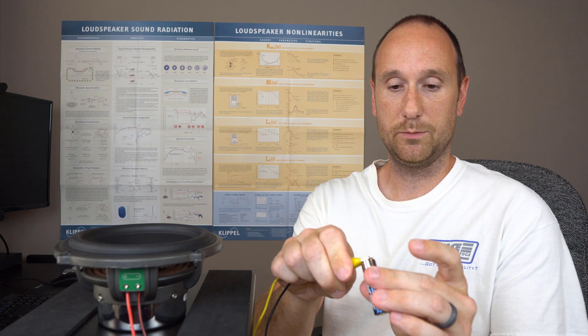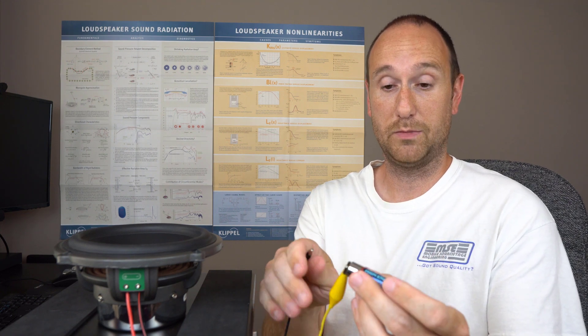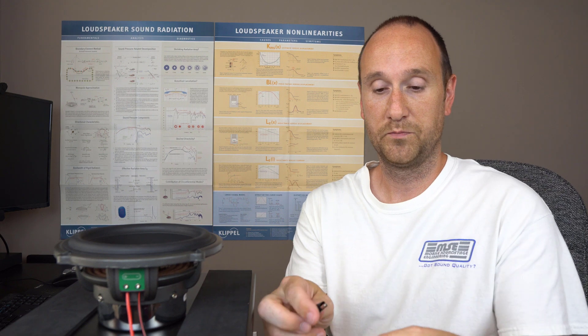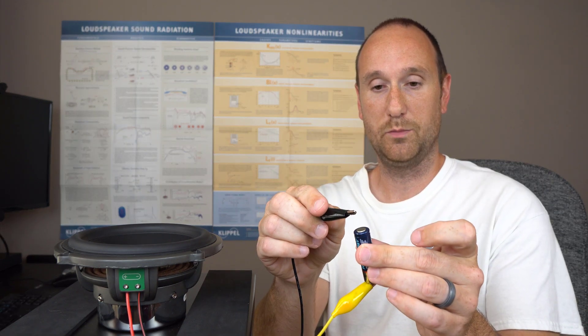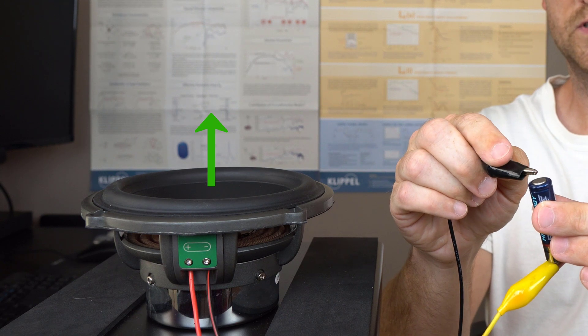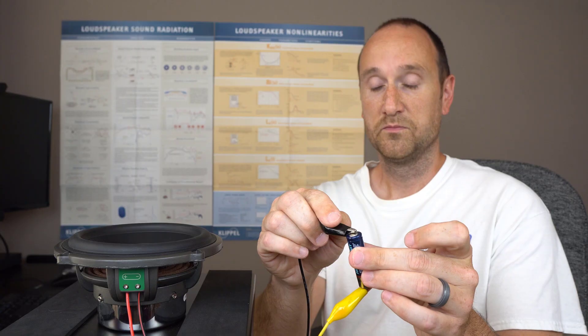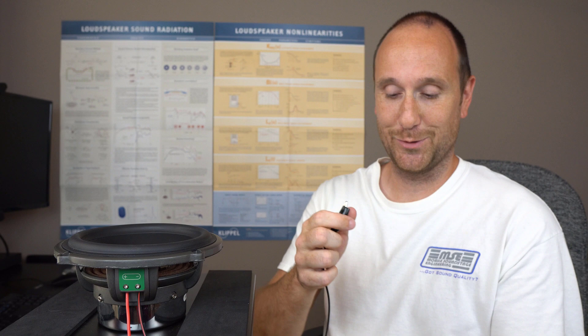I'm gonna connect my yellow cable, which I believe is my positive terminal on the speaker. And I'm gonna connect my black alligator clip to the negative terminal of the battery. And you can see that the speaker moves out.